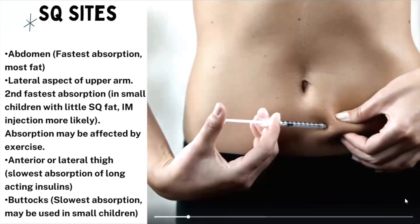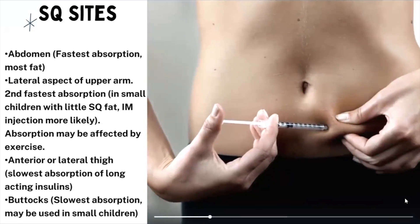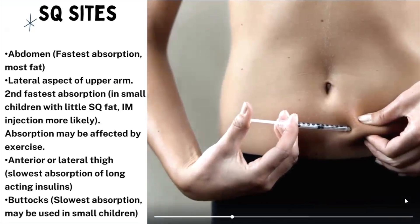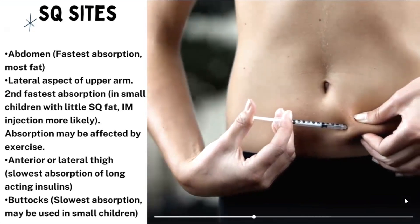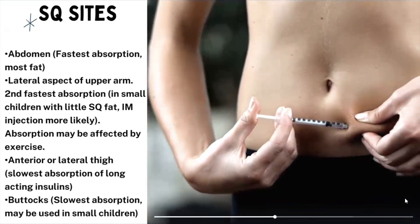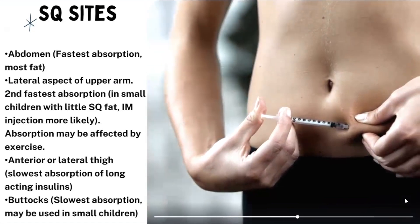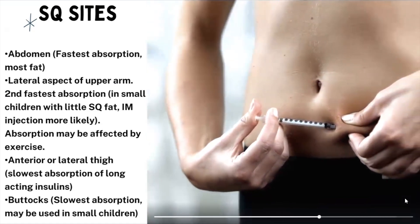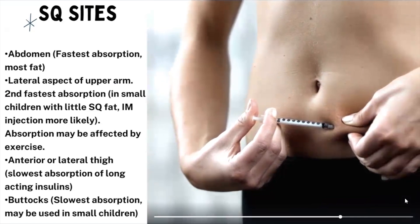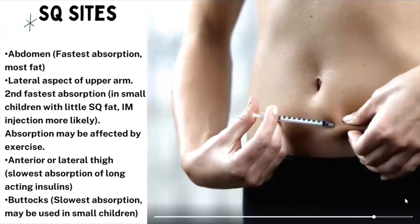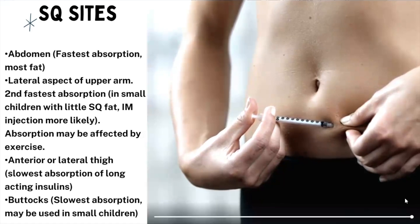The abdomen has the fastest absorption because it has the most fat there — as you can see, the person is injecting themselves on the video right now. The lateral aspect of the upper arm is your second fastest absorption and can be used in small children with little subcutaneous fat. It's important to note that absorption can be affected by exercise, because exercise increases blood flow and therefore the absorption rate can change.